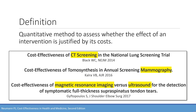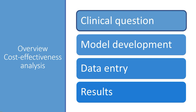Here are some examples from the literature. In the first study they assessed the cost effectiveness of CT screening for lung cancer detection, after they showed in an earlier study that CT screening of the lung can reduce mortality from lung cancer by about 20%. This is the overview on how to conduct a cost effectiveness analysis.